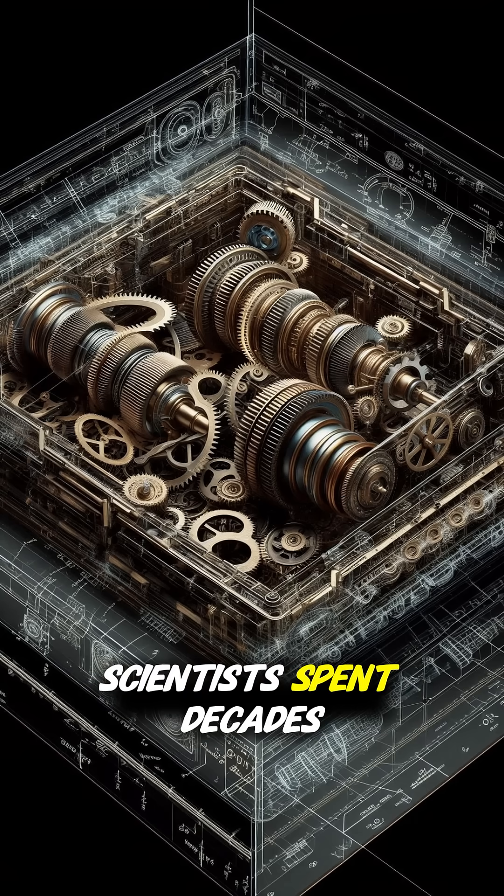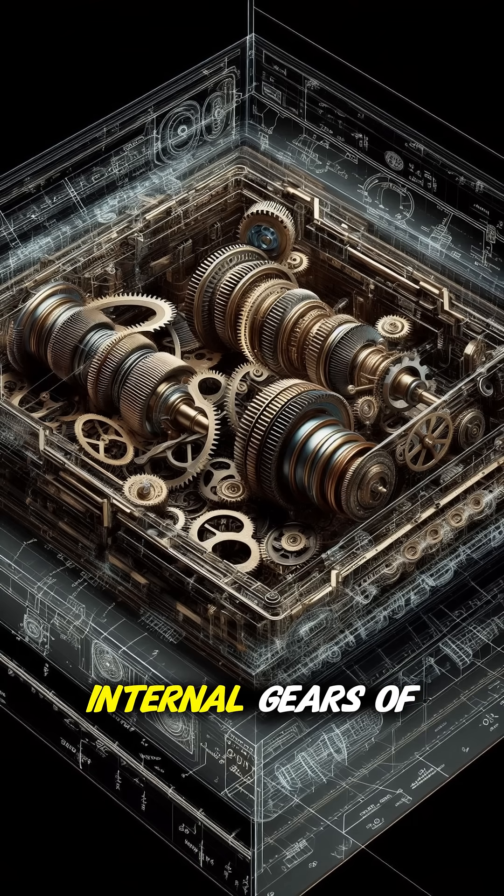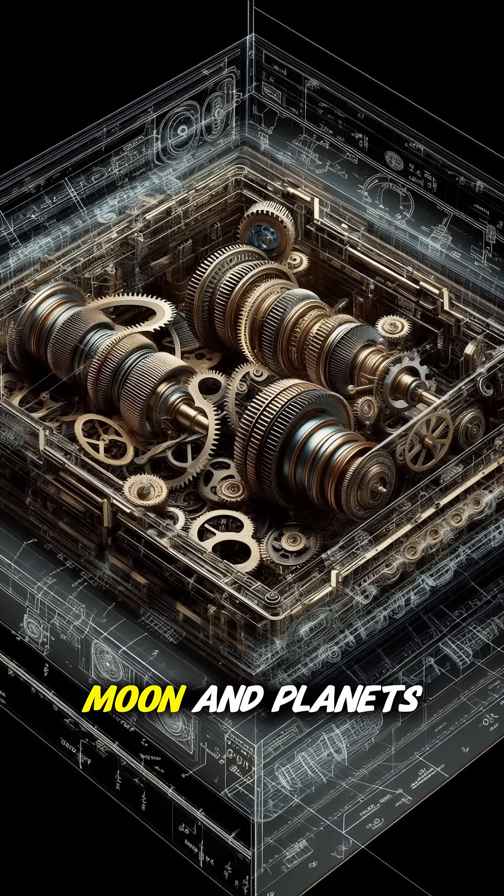Scientists spent decades figuring out how it worked. X-rays revealed internal gears of incredible complexity. It could calculate the positions of the sun, moon, and planets.